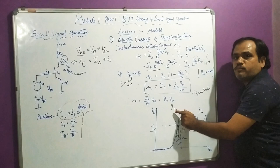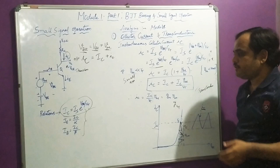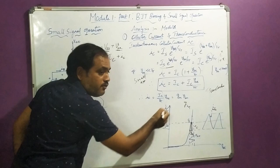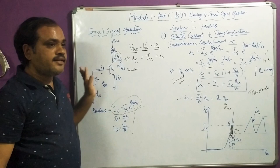Therefore, I have obtained the transconductance equation: GM = IC/VT. I hope you have understood everything in this concept. The first model we have studied is collector current transconductance. In the next session, we will discuss base current with its input resistance, and collector-emitter current with its input resistance. Thank you.